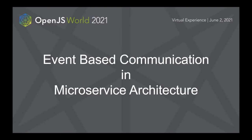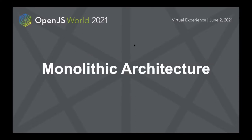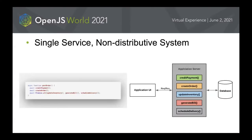What better example than a retail industry? Let's talk about an application that lets you order things, pay for it online, and deliver it to an address. To start with, we have monolithic architecture. In a monolithic architecture, there is just a single service or server on which all the models, business logic, and read and write operations happen.